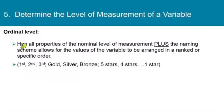Now at the ordinal level, we have all the properties of the nominal level, plus we now have the ability to arrange things in a ranked or specific order. So anytime you have, say, for example, first place, second place, third place, those are in order. Presumably first place is better than second, and second is better than third. How about the Olympics? Gold, silver, bronze. How about Amazon's rating system? Five stars, four stars, and so on, down to one star.